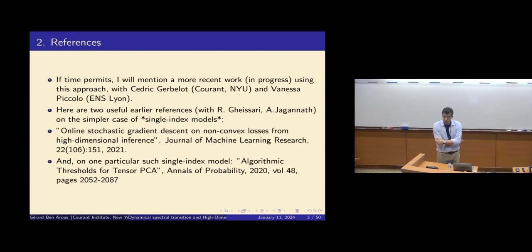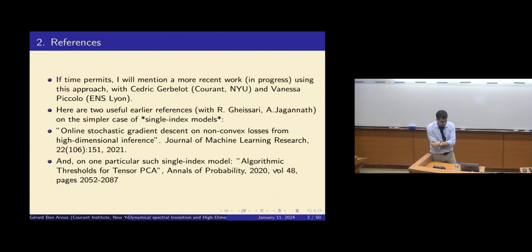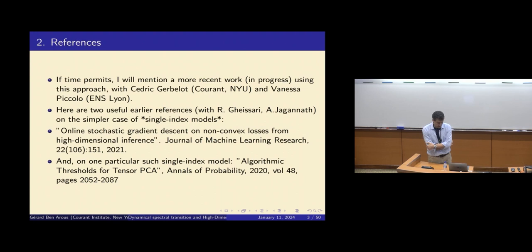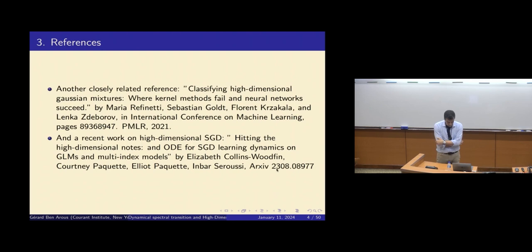Here are two useful earlier references on the same type of thing, again with Reza and Okos — one in GMLR on online gradient descent for single index models, where we introduced what is called the information exponent, and an older work on tensor PCA. Two other interesting related references include work by Maria Raffinetti, Sebastian Goldt, Florent Krzakala, and Lenka Zdeborová, and recent work by Elizabeth Collins-Woodfin, Courtney Paquette, Elliot Paquette, and Inbar Seroussi.